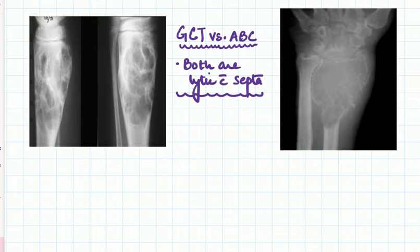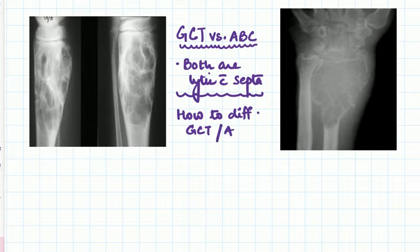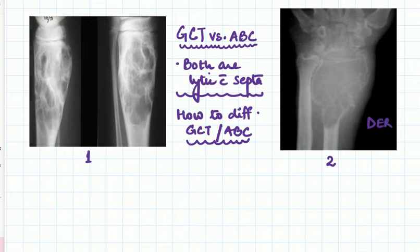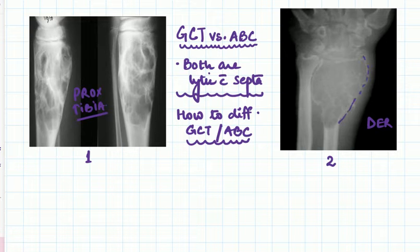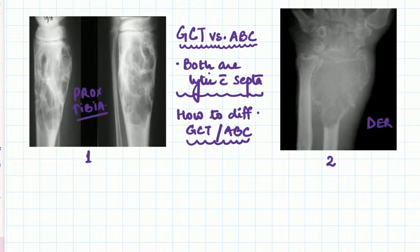How to differentiate GCT from ABC is the question. We have two images: image one shows the distal end of the radius, and image two shows the proximal tibia. Both lesions look almost the same — big lytic cavities with multiple septae on both sides. So which one is GCT and which one is ABC?